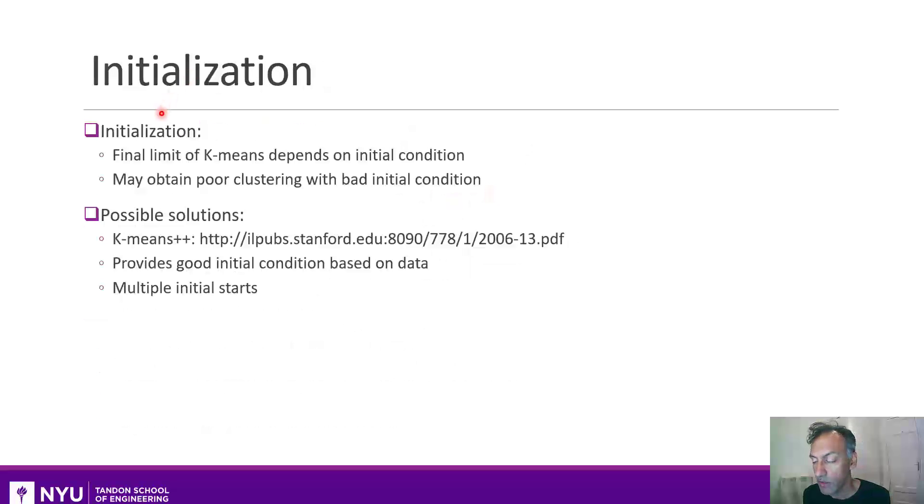That brings me to the topic of initialization. So we saw that the final result of k-means depends on the initial condition, and sometimes you end up with a bad clustering with a bad initial condition. So there are some good heuristic algorithms out there. One of them is what's called k-means++, which is probably the most commonly used algorithm, and it's one that's also used in SK Learn. You can also do things with multiple initial starts. Not going to go over them, but feel free to check out this web link.